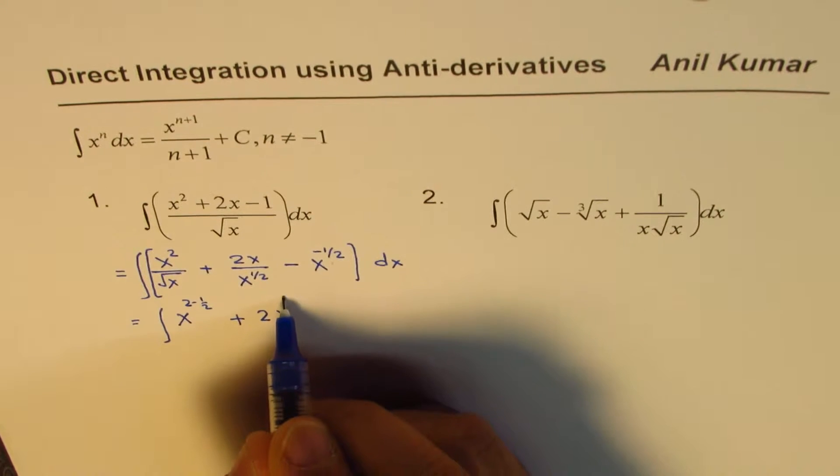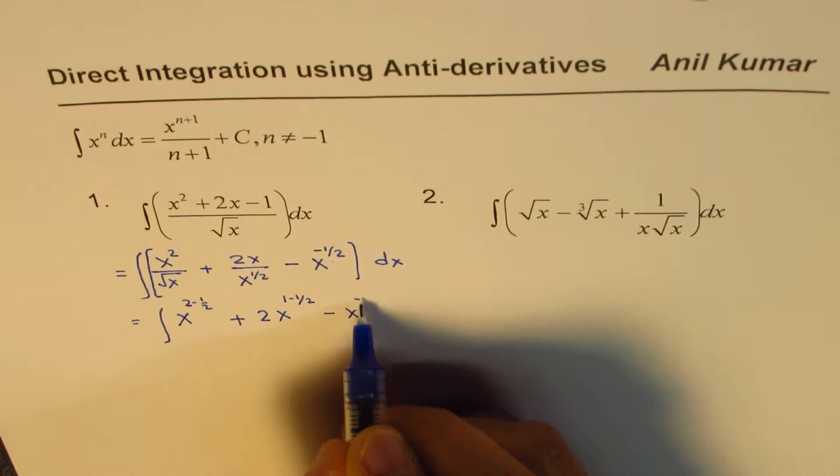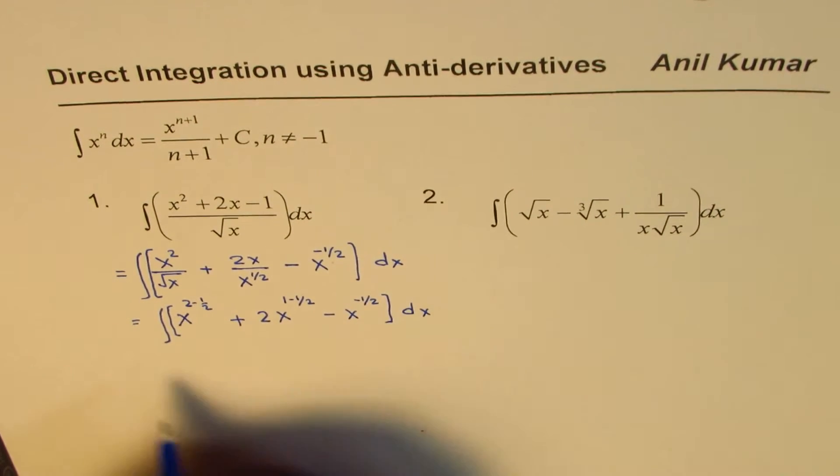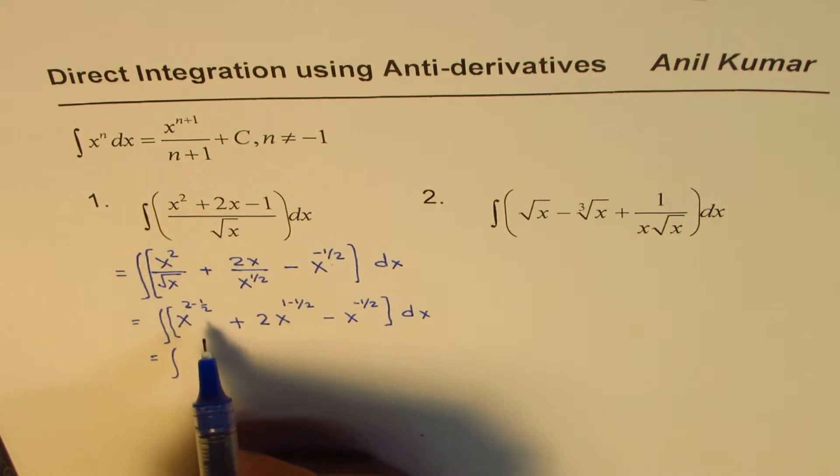Plus 2x to the power of 1 minus half. And x to the power of minus half, d of x, for the whole thing. So basically, you have to simplify it.